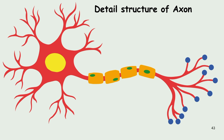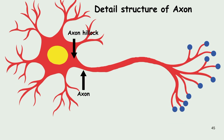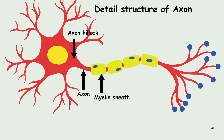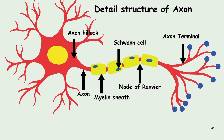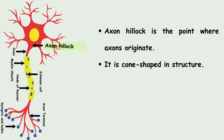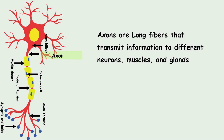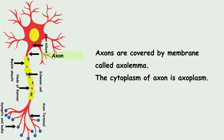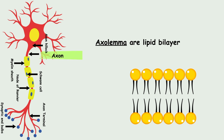Now let us see the detailed structure of the nerve fiber, known as the axon. An axon contains the axon hillock, myelin sheath, Schwann cell, node of Ranvier, axon terminal and synaptic end bulb. The axon hillock is the point where axons originate — it is cone-shaped in structure. Axons are long fibers that transmit information to different neurons, muscles and glands. Axons are covered by a membrane called the axolemma, and the cytoplasm of the axon is known as axoplasm. The axolemma, just like other cell membranes, is made up of a lipid bilayer, and it conveys signals between neurons and Schwann cells.